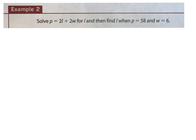They've given us P equals 2L plus 2W. What equation is that? That is the perimeter formula for a rectangle. They want us to now solve it for L, so instead of having P by itself, they want L by itself. We're going to take this equation and solve it so that L is by itself. My first step is to get rid of everything that doesn't have an L in it.